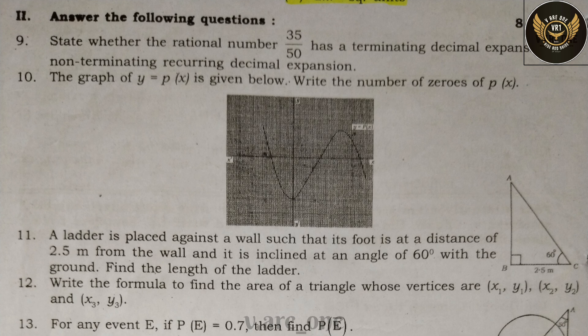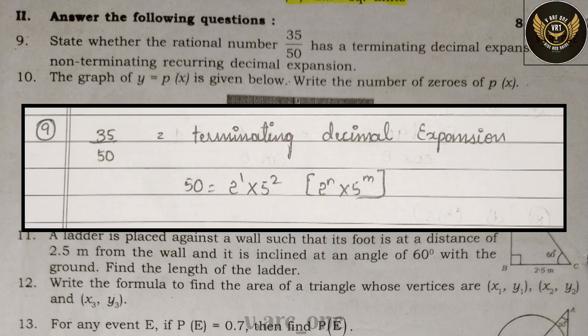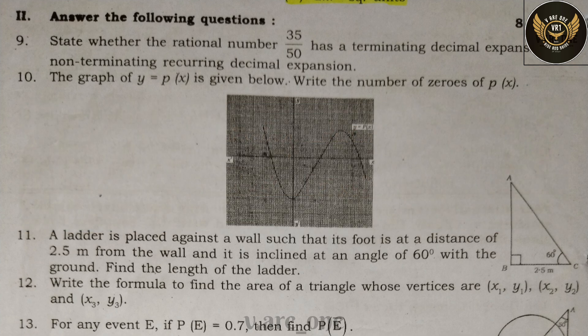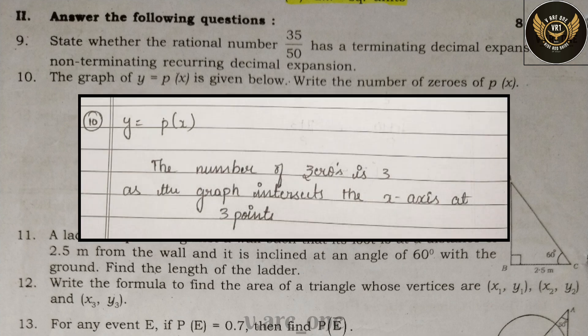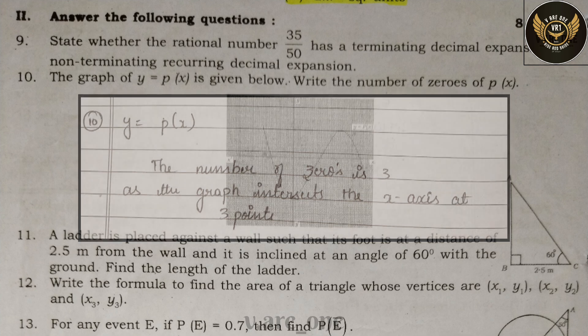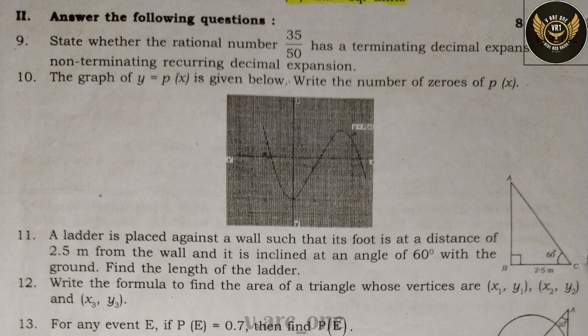Ninth one: state whether the rational number 35/50 has a terminating or non-terminating recurring decimal expansion. Answer: 35/50 is a terminating decimal expansion, since 50 = 2² × 5². Tenth one: the graph of y = p(x) is given. The number of zeros of p(x) is 3, as the graph intersects the x-axis at 3 points.